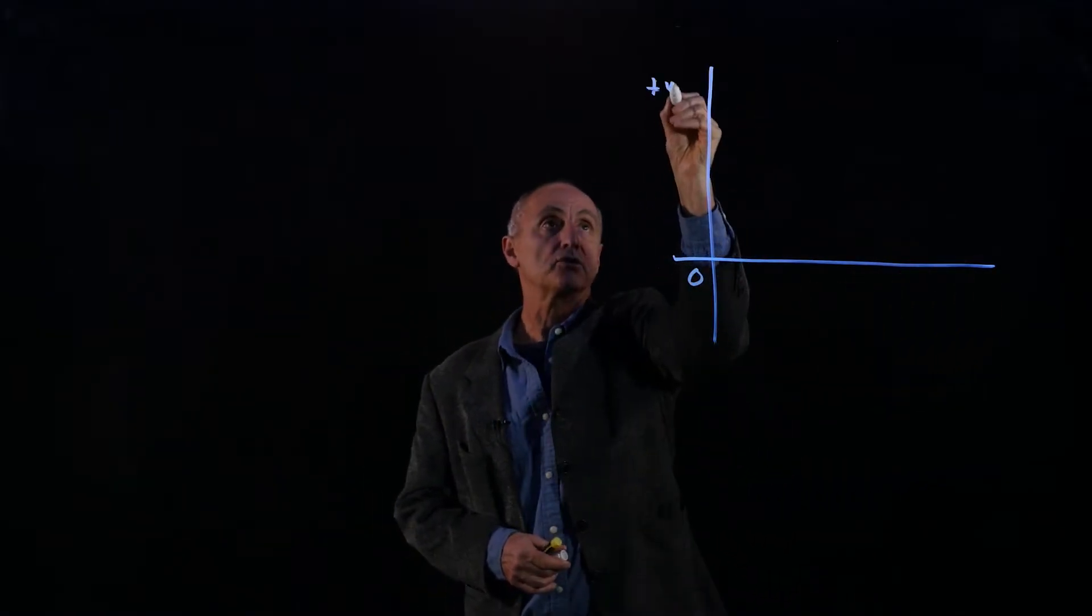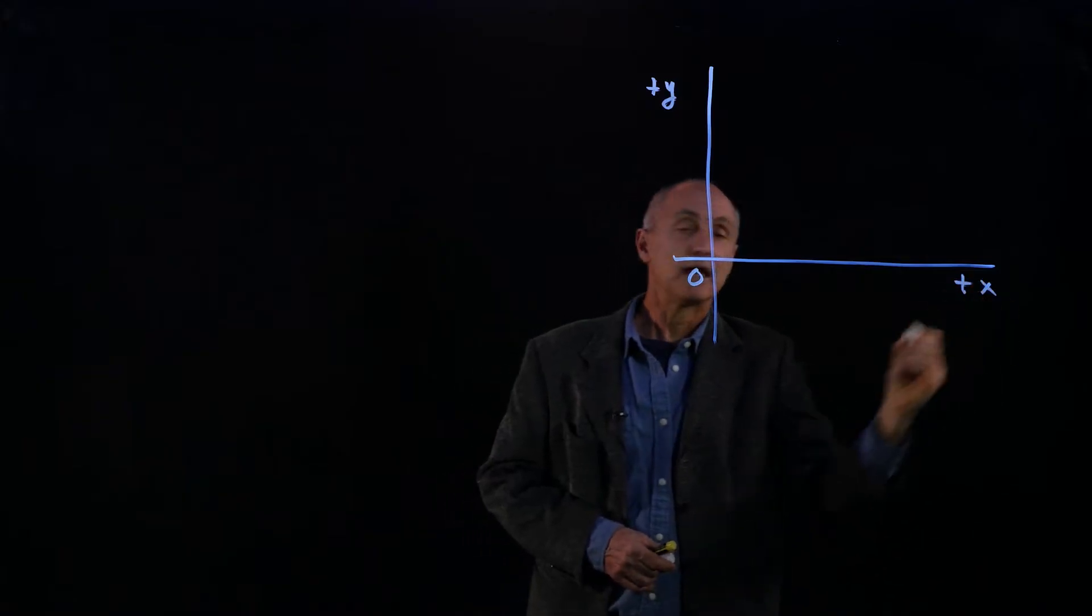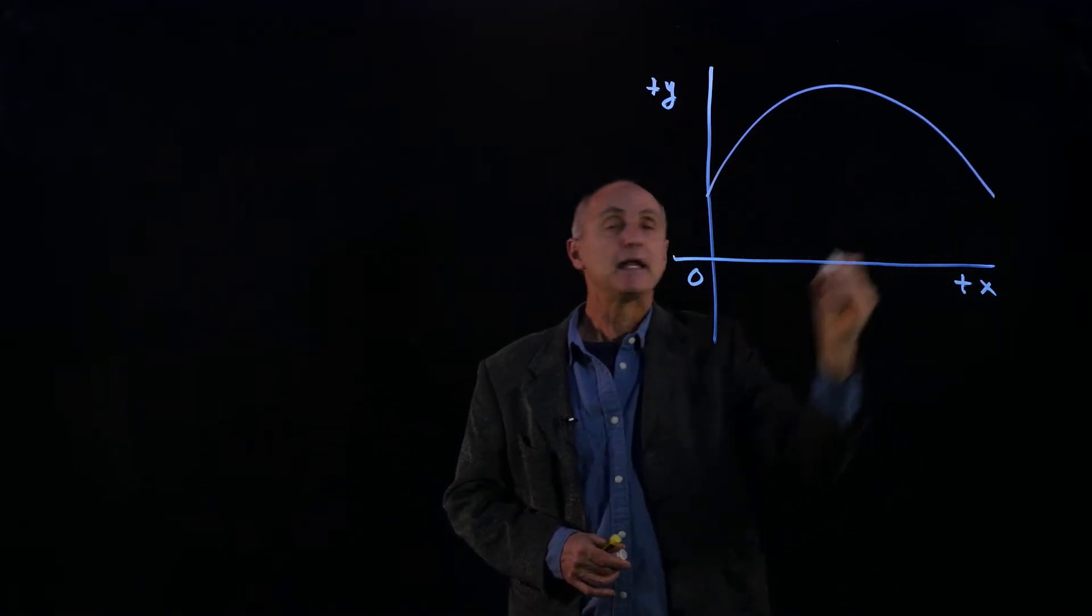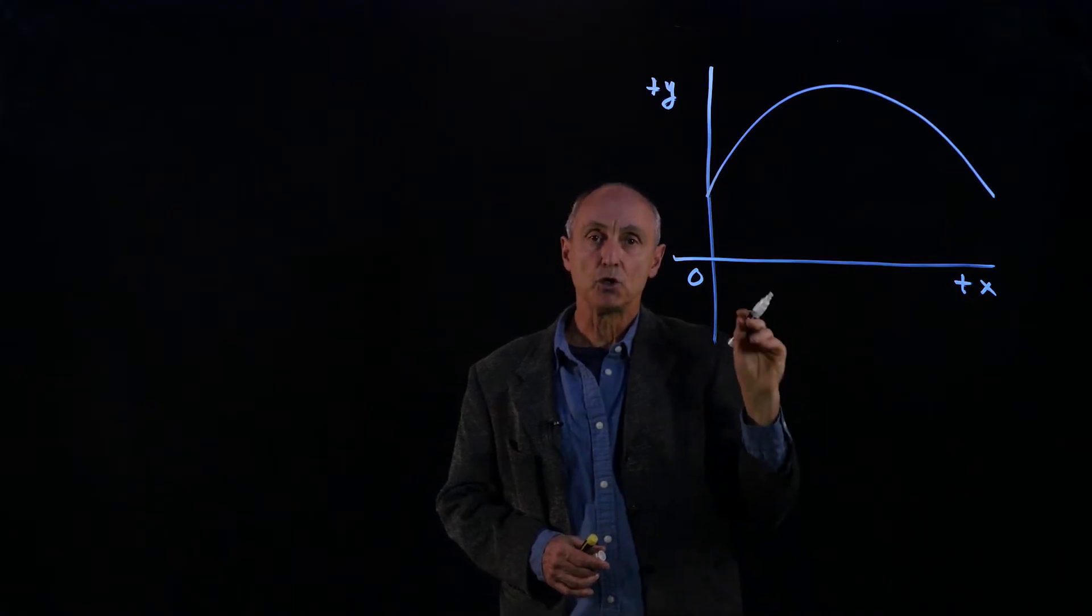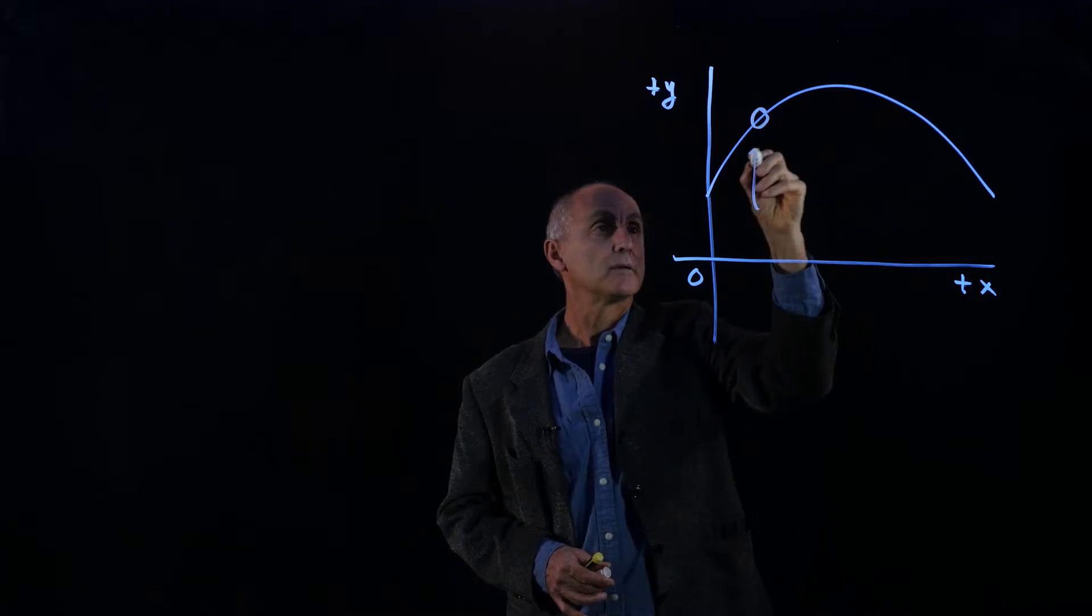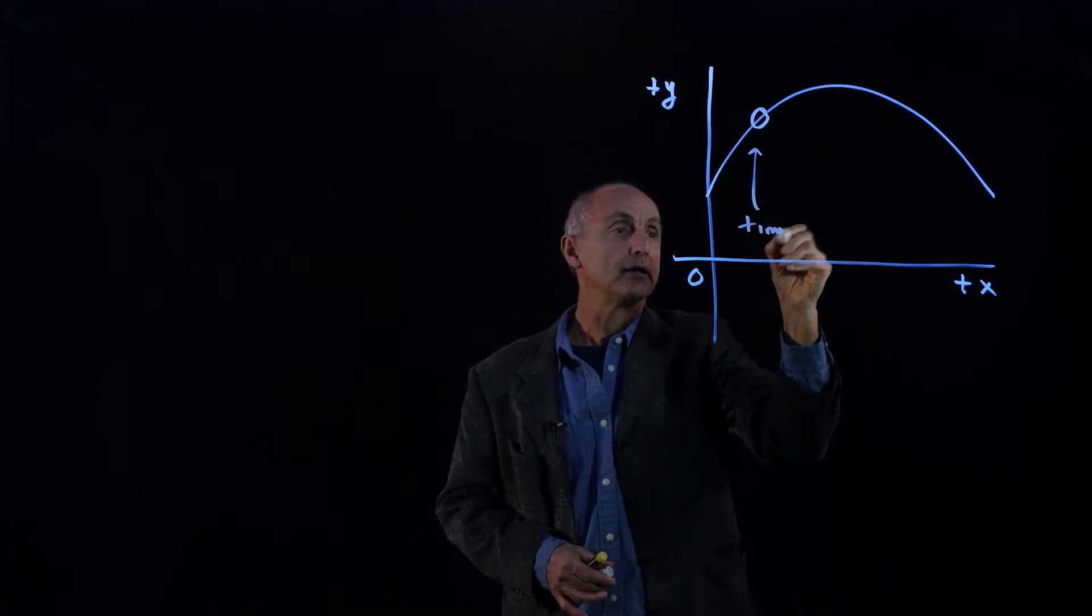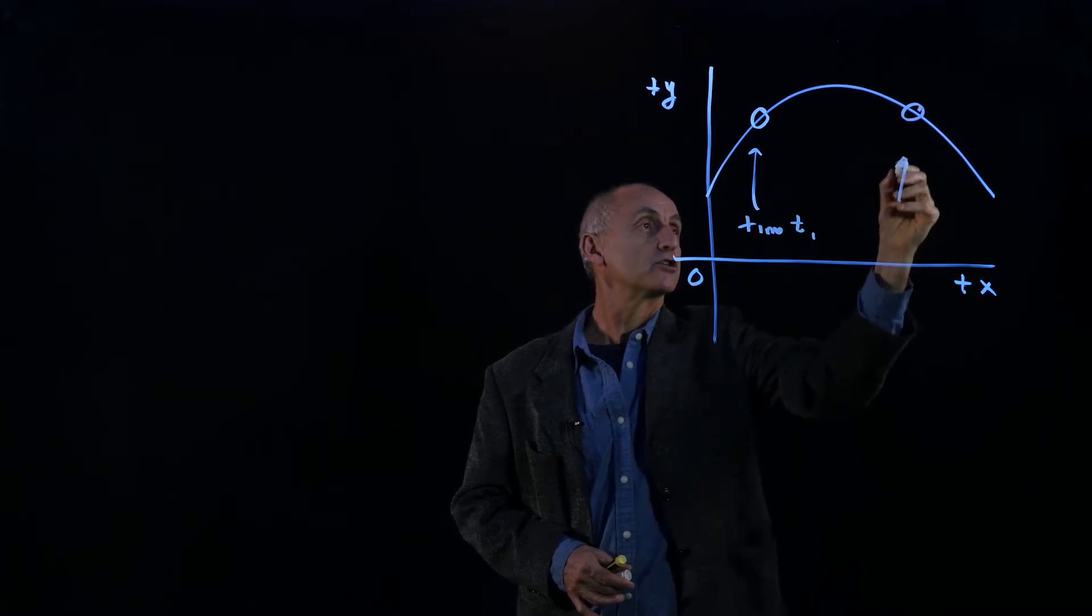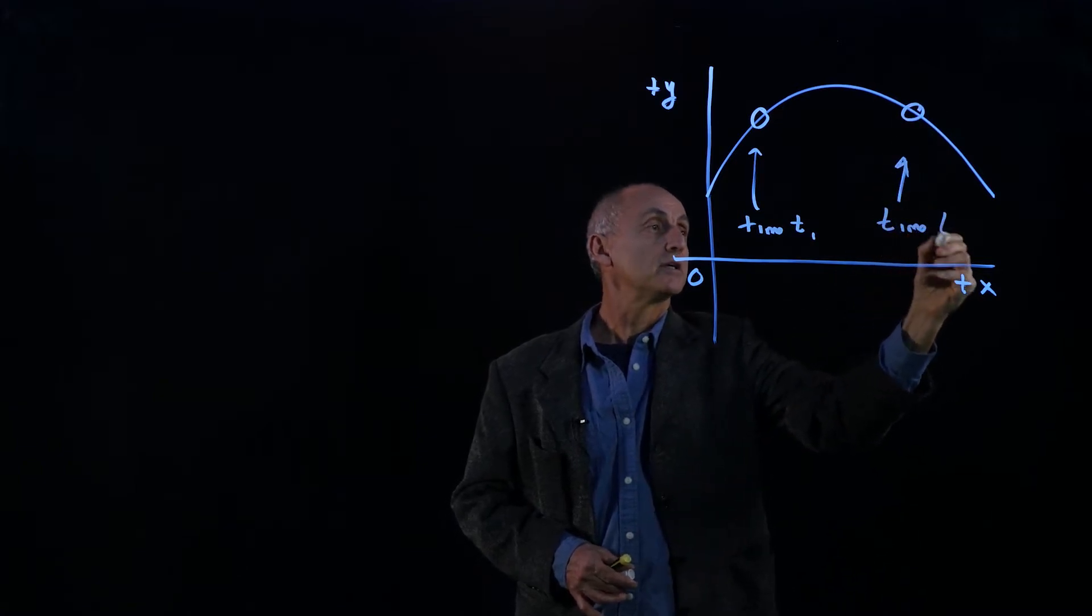We have an origin, plus y, plus x, and let's draw the trajectory of our object. And now let's draw the object at two different times. So, for instance, if I call this the location at time t1, and a little bit later here, this is the location of the object at time t2.